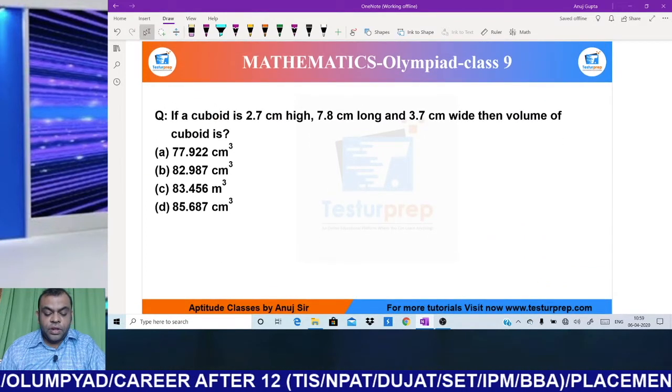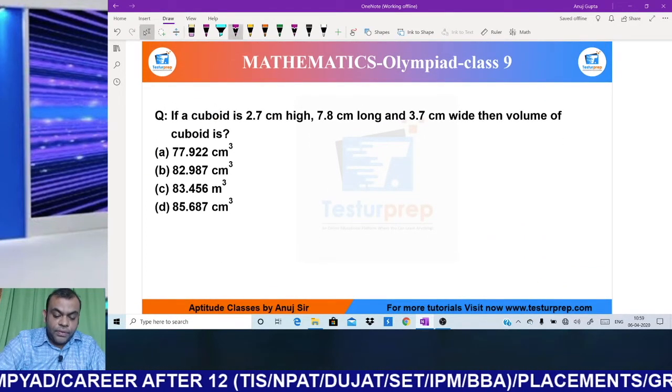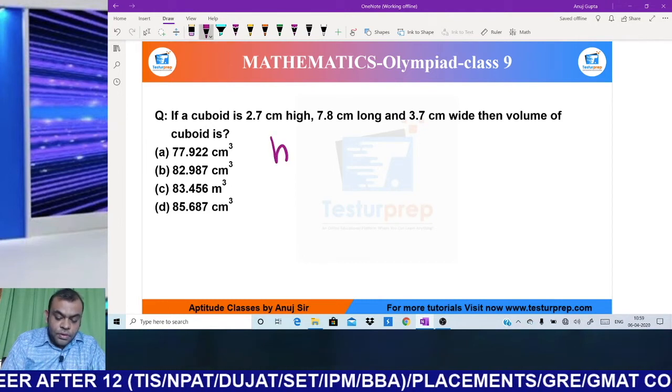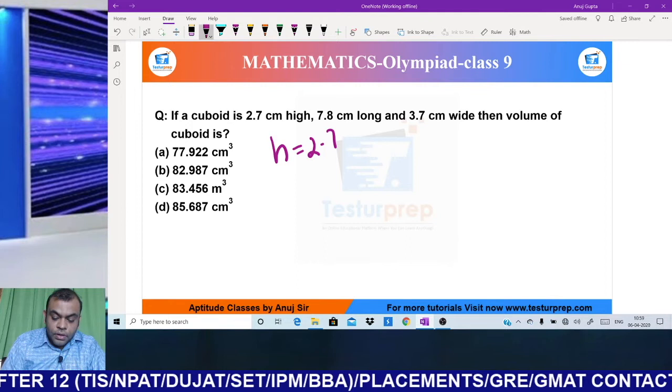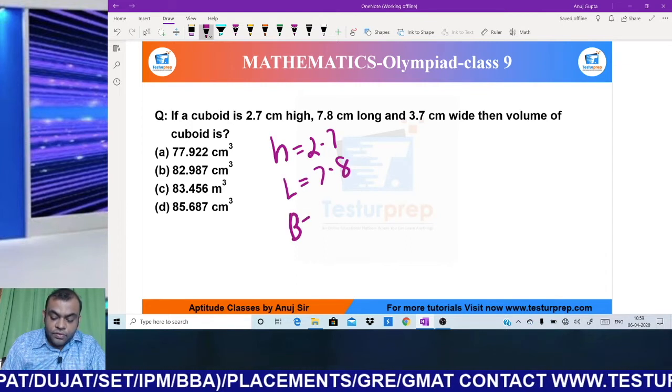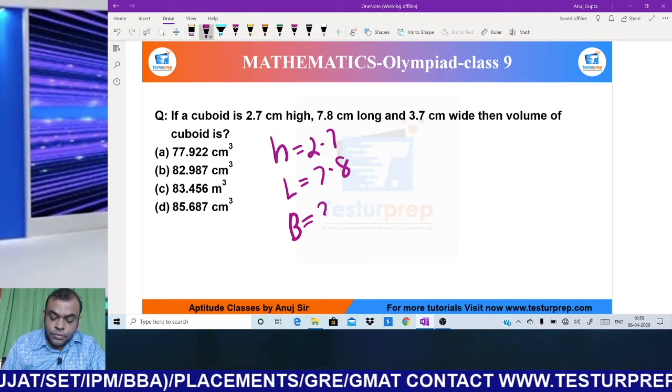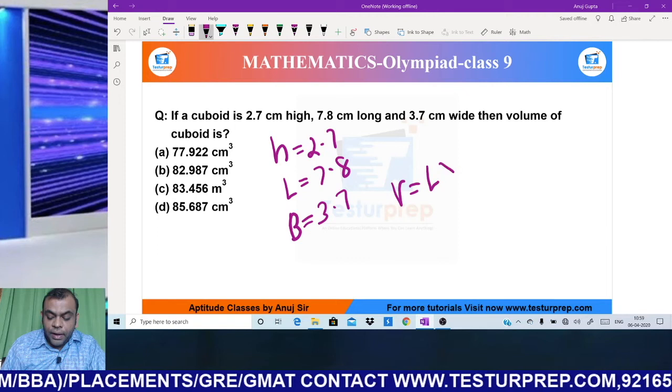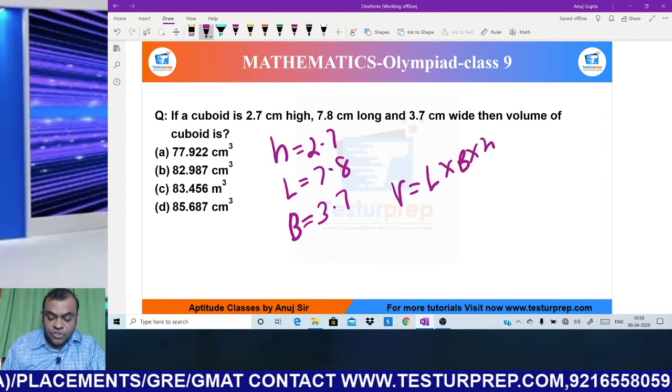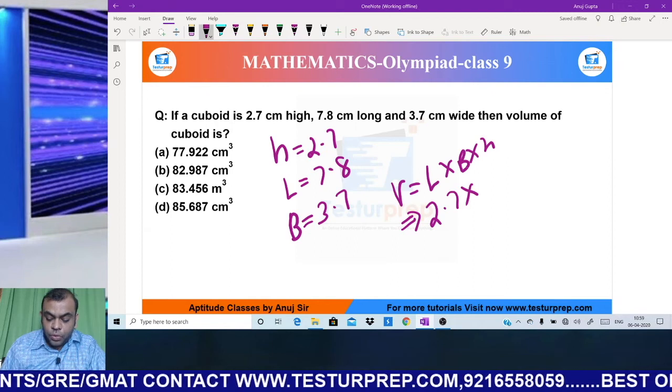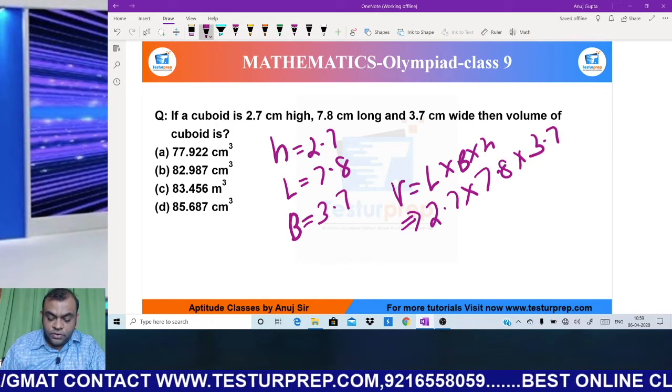My next question: if a cuboid has height 2.7, length 7.8, and width 3.7, find the volume. Volume = L × B × H, so it becomes 2.7 × 7.8 × 3.7.